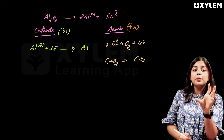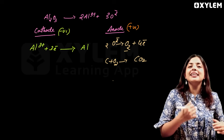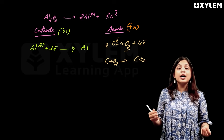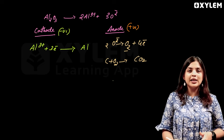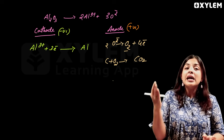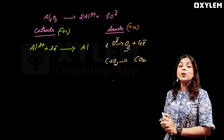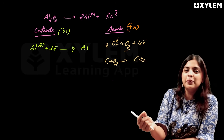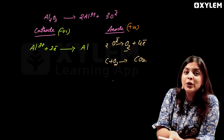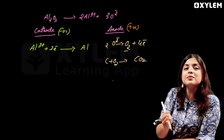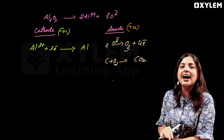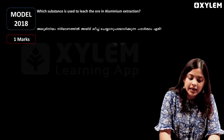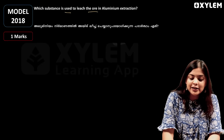Because the carbon anode reacts with oxygen to form carbon dioxide, we need to periodically replace the anode. This is why the anode needs replacement in this production set. Now let's look at some practice questions. Which substance is used to leach the ore in aluminum extraction?